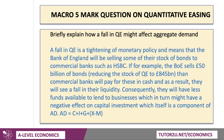A fall in QE — quantitative easing — is a tightening of monetary policy. That means that the Bank of England, that's the central bank, will be selling some of their stock of bonds that they've previously bought off the banks to commercial banks such as HSBC.